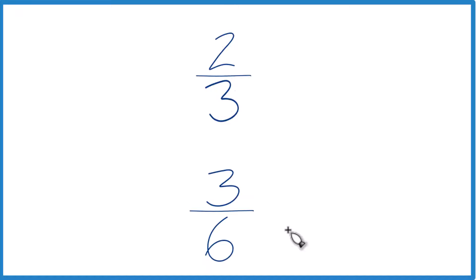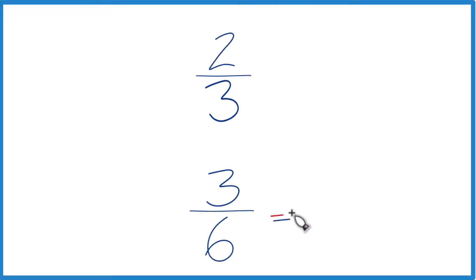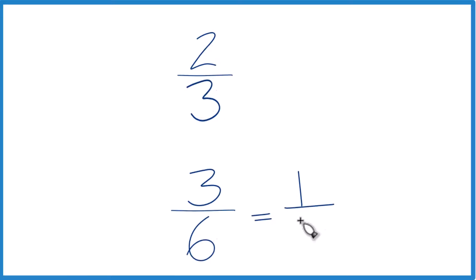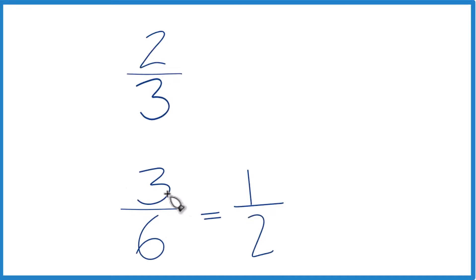You could also reason it out. You could look at this and say, well, two-thirds is greater than one-half, and three-sixths — we can actually just reduce that. That's the same as one-half. Three goes into six two times.